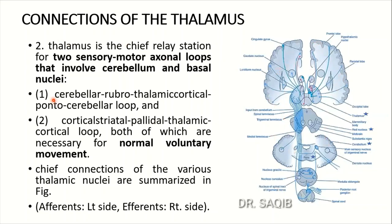The thalamus is a chief relay station for two sensory-motor axonal loops involving the cerebellum and basal nuclei. The first loop is the cerebellar-rubro-thalamic-cortical-pontro-cerebellar loop, and the second is the cortical-striatal-pallidal-thalamic-cortical loop. Both are necessary for normal voluntary movement. The chief connections of the various thalamic nuclei are summarized in a figure with afferents on the left and efferents on the right.